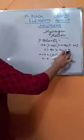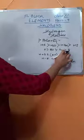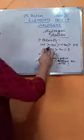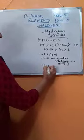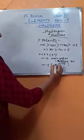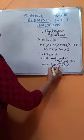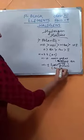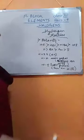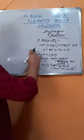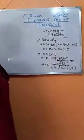In case of iodine and hydrogen, the electronegativity difference between hydrogen and iodine will be the least among all the hydrogen halides. So the HI bond is least polar due to the least electronegativity difference. This is the polarity order: HF is most polar and HI is least polar.